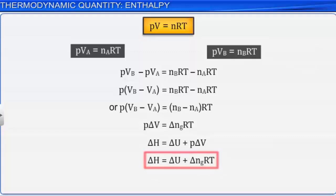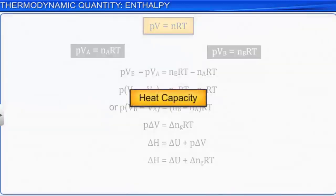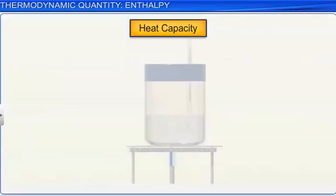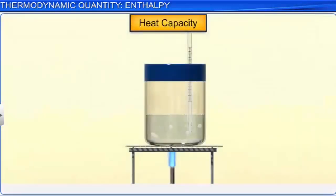Substituting, delta H = delta U + delta Ng × RT. This relation helps us in calculating the change in enthalpy from change in internal energy, and vice versa. Now let's learn about heat capacity.